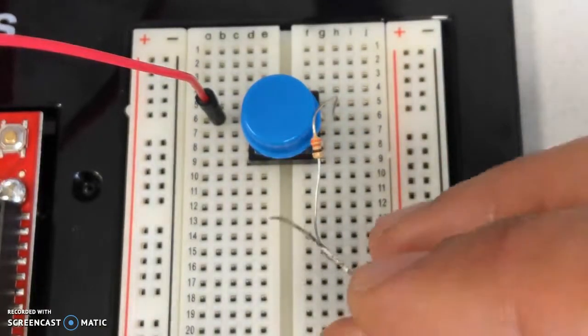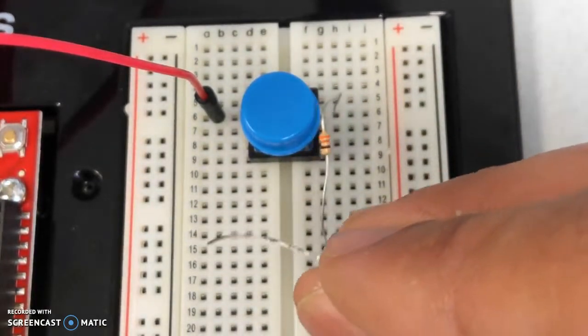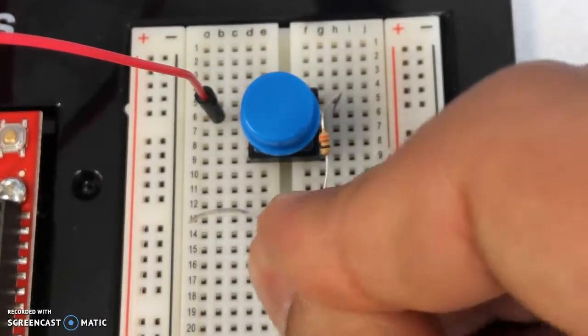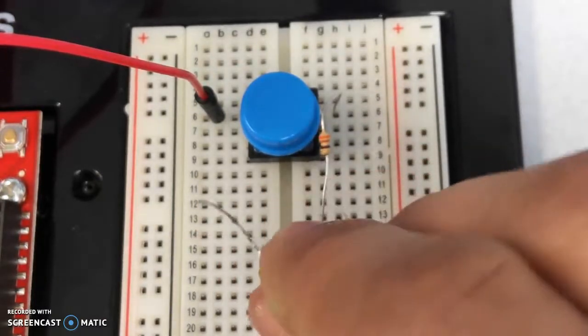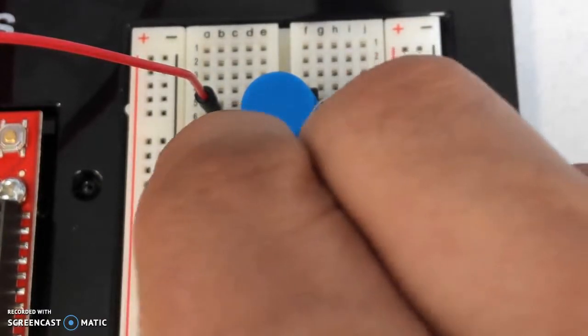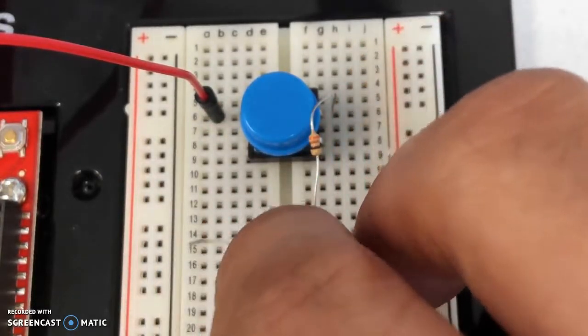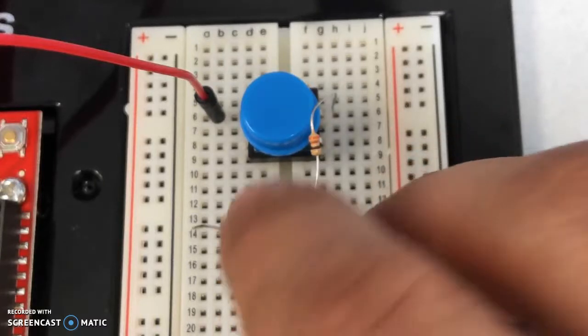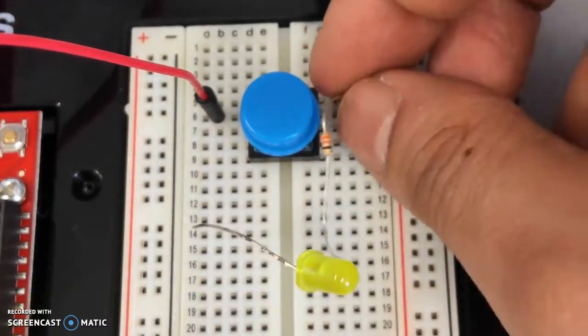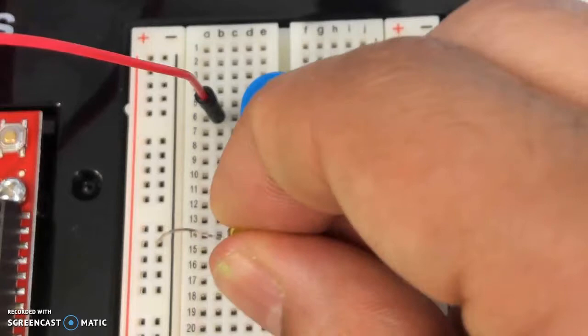So I have an LED right here and one leg of the LED will go on one side of the resistor and the other leg of the LED I'm going to push on. The other side of the LED is going to go towards ground. Let me do that.